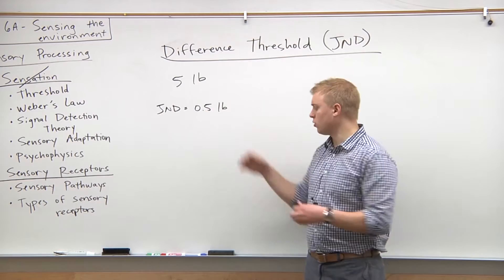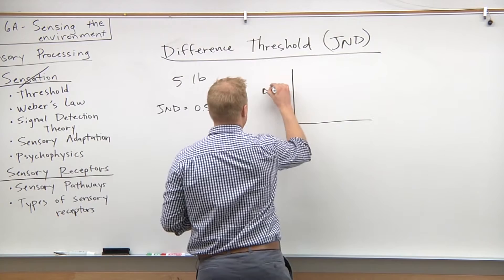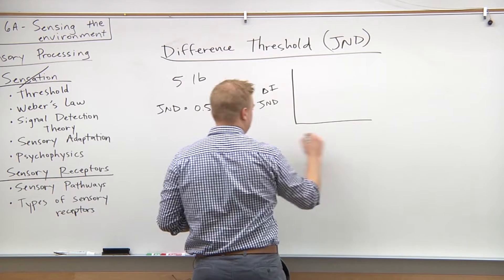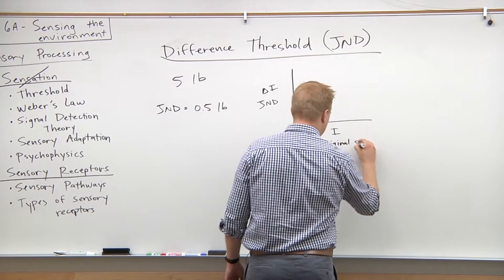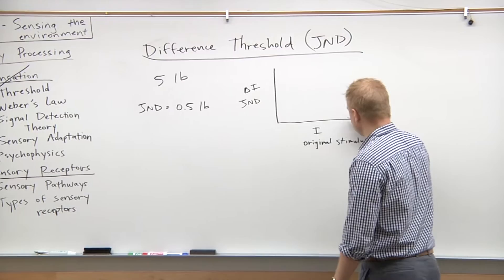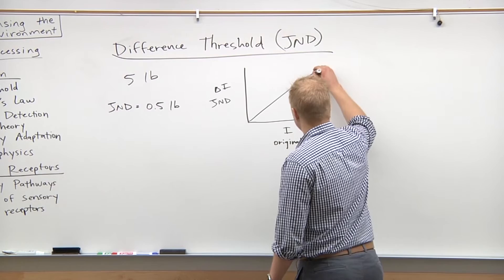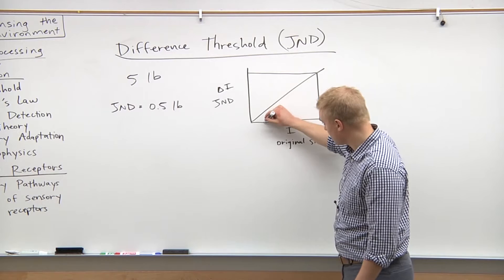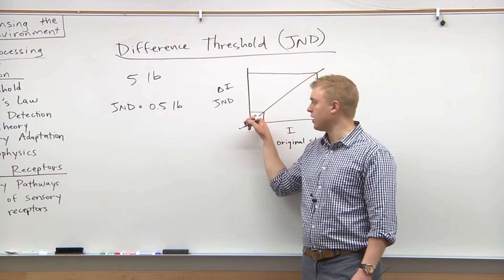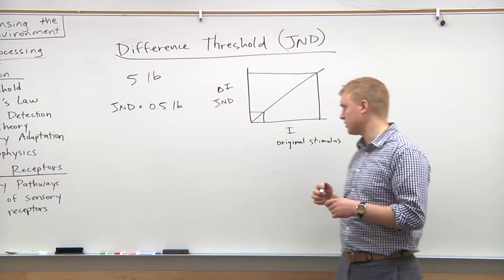If you show that in a graph, you'd have the delta i, which is the JND, and then I, which is the original stimulus on the x-axis. So as the original stimulus increases, your JND is also going to increase with that. If you have a very small initial stimulus, that's where our sensory systems are most sensitive and you will need a smaller difference in the next stimulus to be able to perceive the difference.